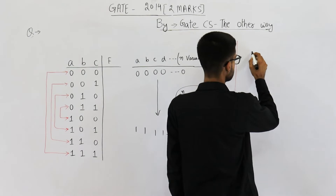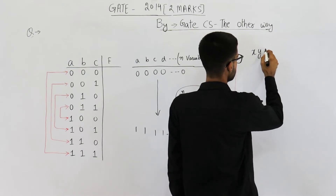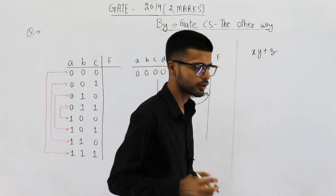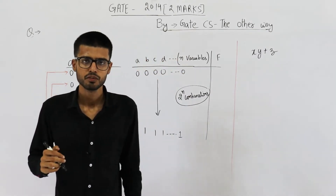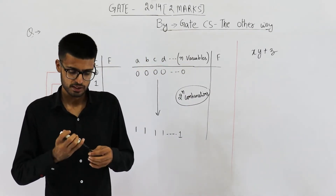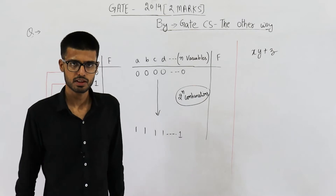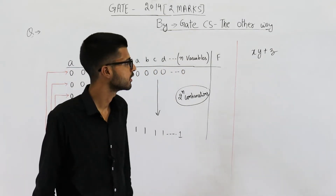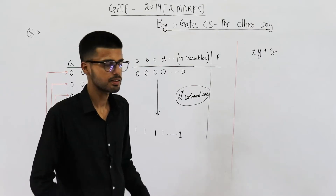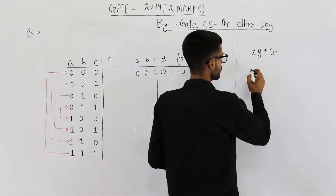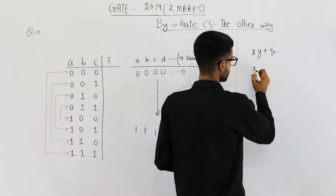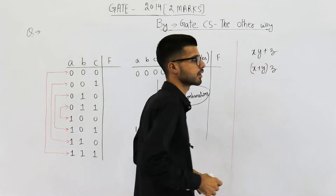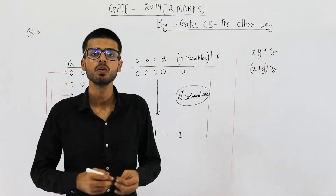The dual of a function — say we have a function xy + z — to find its dual you need to do two things. First, all the ones are changed to zeros and zeros are changed to ones. You can see we don't have any one or zero here, so we need not do this step. Second step is change dot to plus and plus to dot. This gives the dual of the given function.